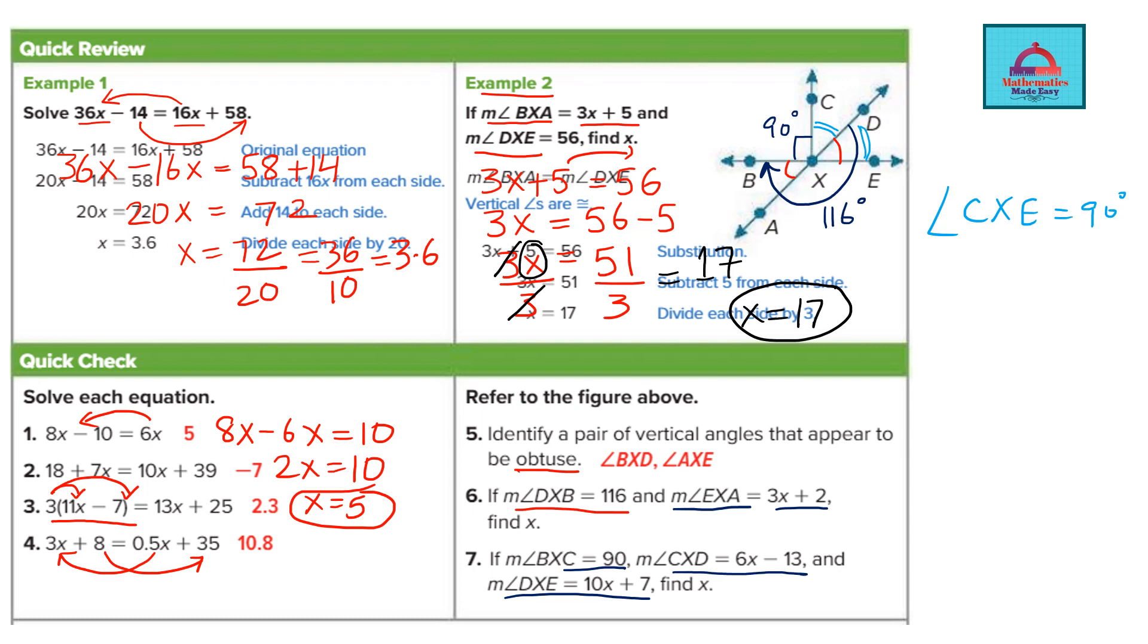That means if I add these two small angles CXD and DXE I get this big angle CXE which is 90.